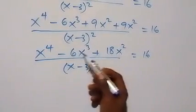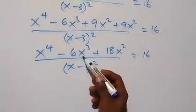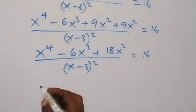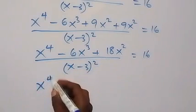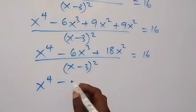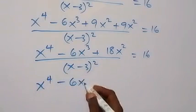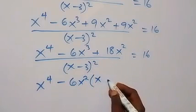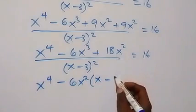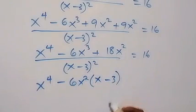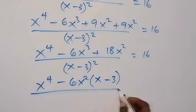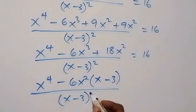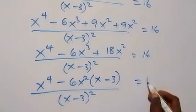From what we have here, we can factor something common, which is 6x², from the last two terms. So this becomes x⁴ minus 6x² times (x - 3), divided by (x - 3)², all equals 16.